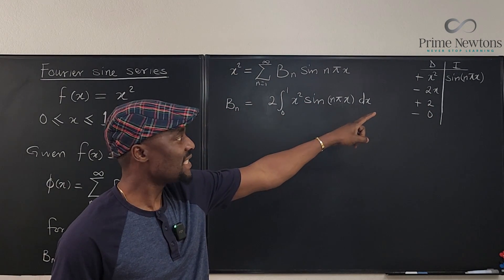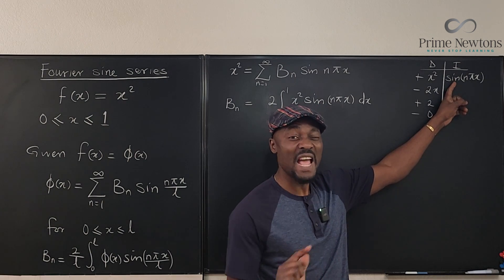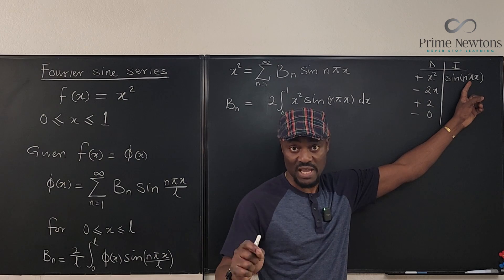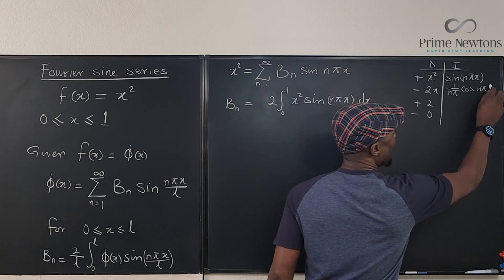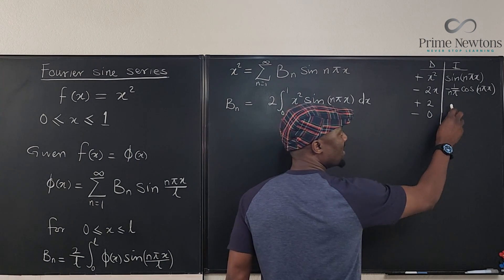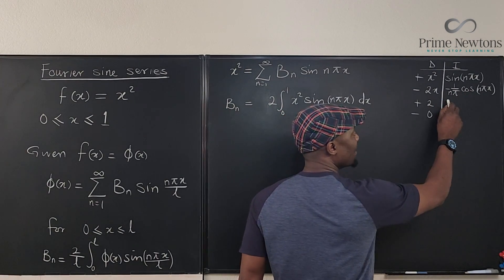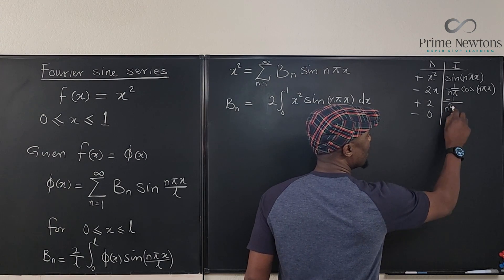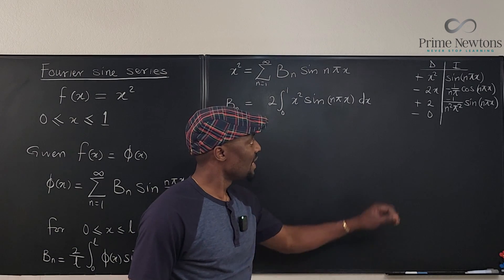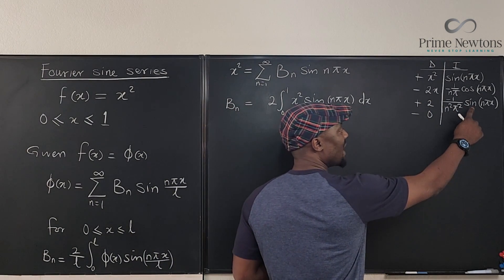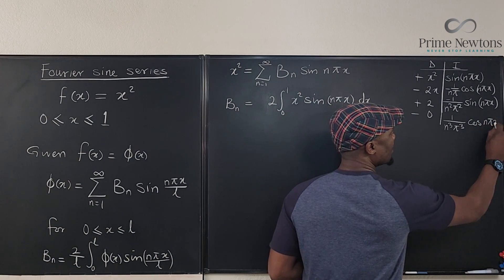When I integrate sine, I go to cosine, but the integral of sine is negative cosine divided by n pi. So it's negative 1 over n pi times cosine n pi x. I'm going to do this one more time, but this is going to be squared. This is going to be negative 1 over n squared pi squared sine n pi x. And finally, we integrate one more time to get 1 over n cubed pi cubed cosine n pi x.